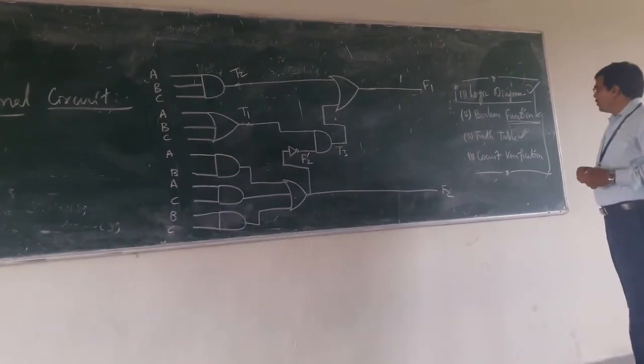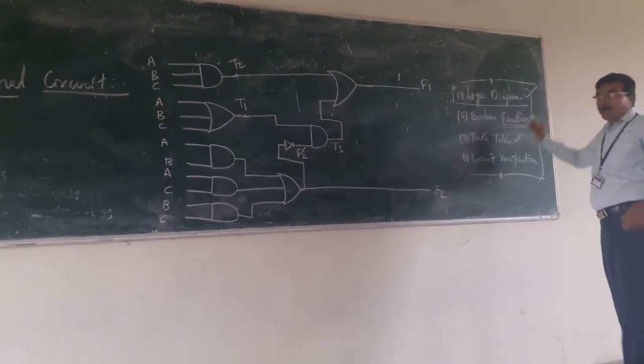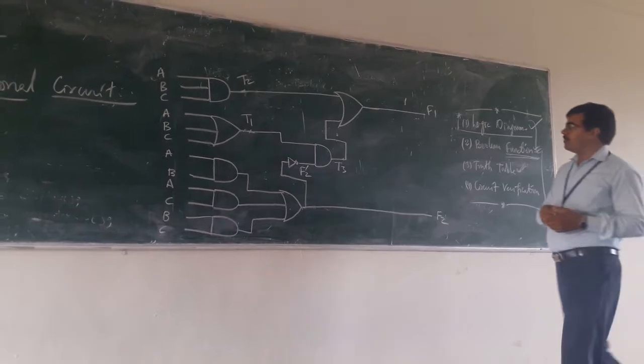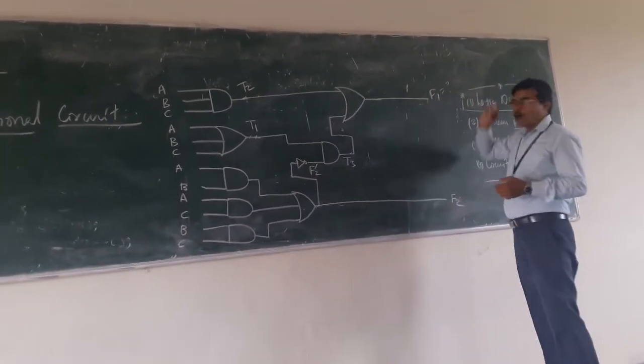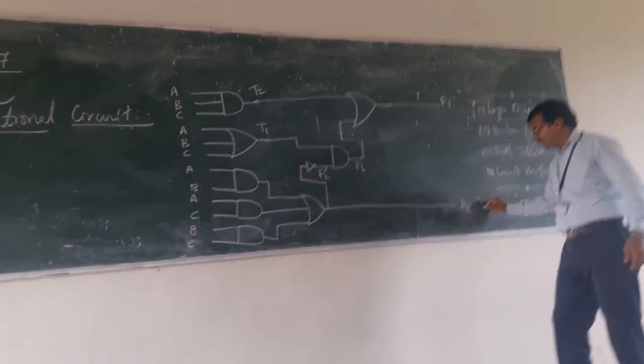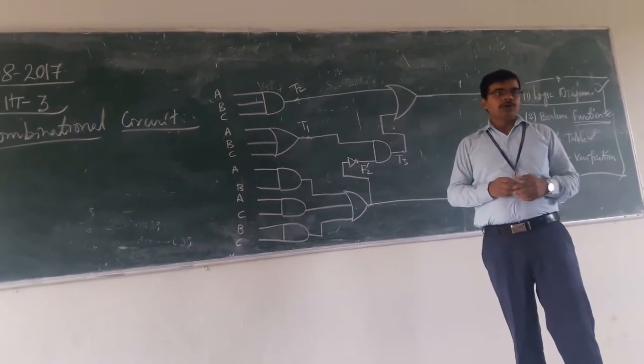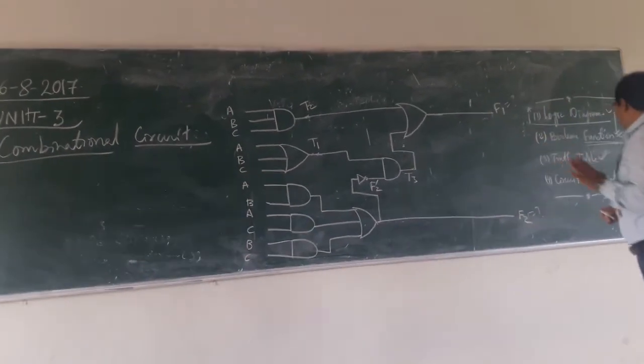What you have to do first is find the Boolean function. Boolean function means how your outputs F1 and F2 are related to your input. So that you have to go for.